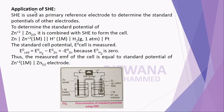The application of the standard hydrogen electrode: the SHE is used as a primary reference electrode to determine the standard potentials of other electrodes. Since its potential is exactly equal to zero, to determine the standard potential of another electrode, we combine it with the standard hydrogen electrode.